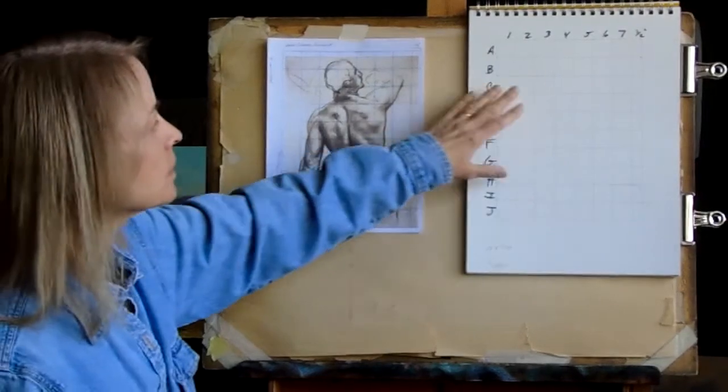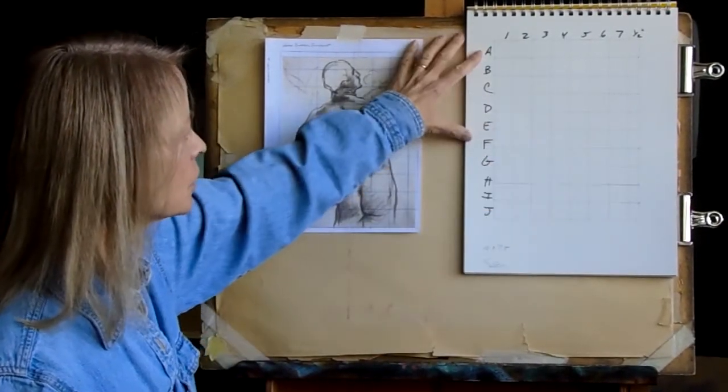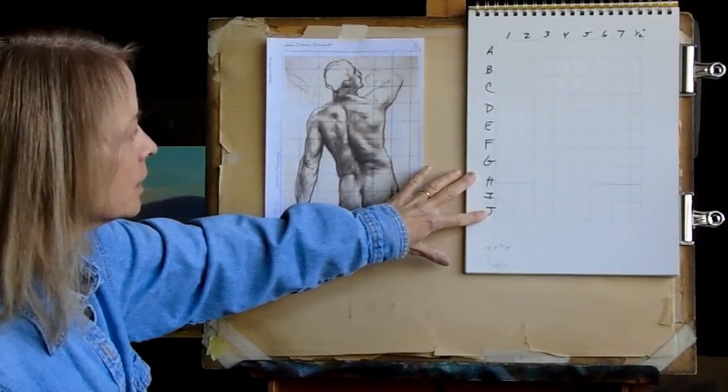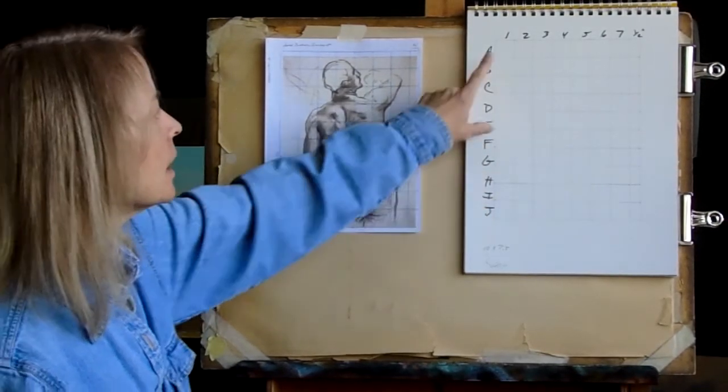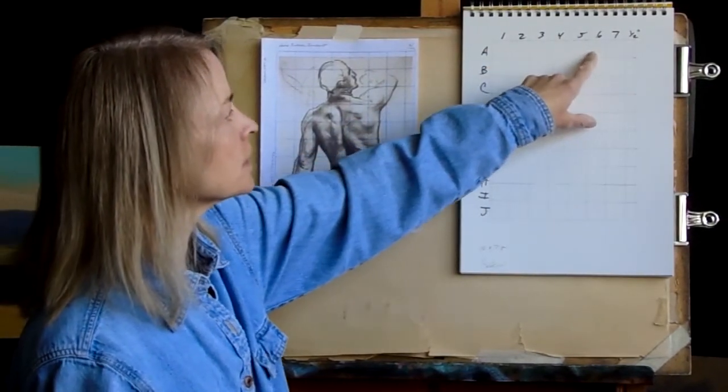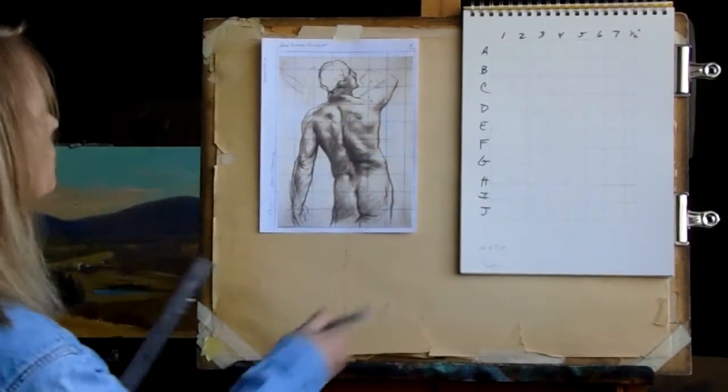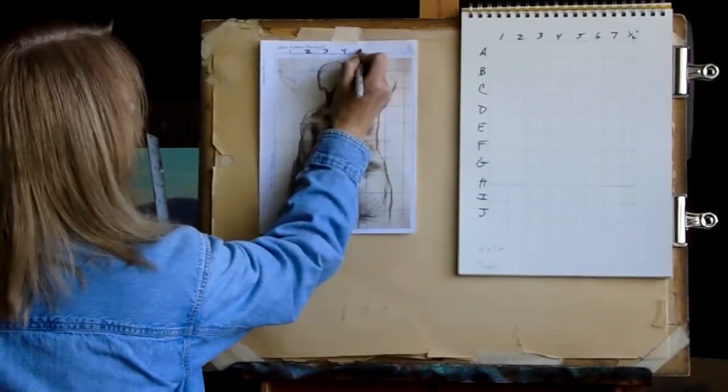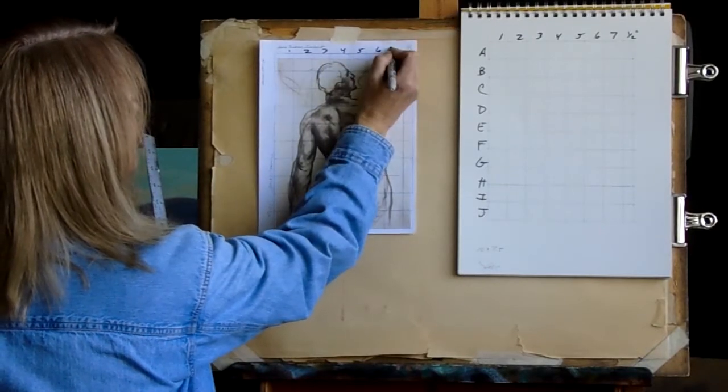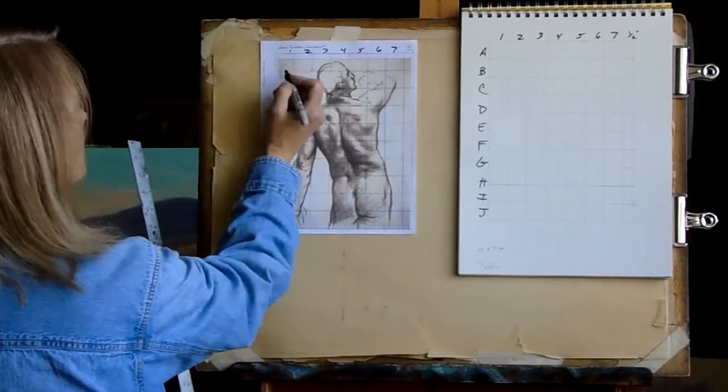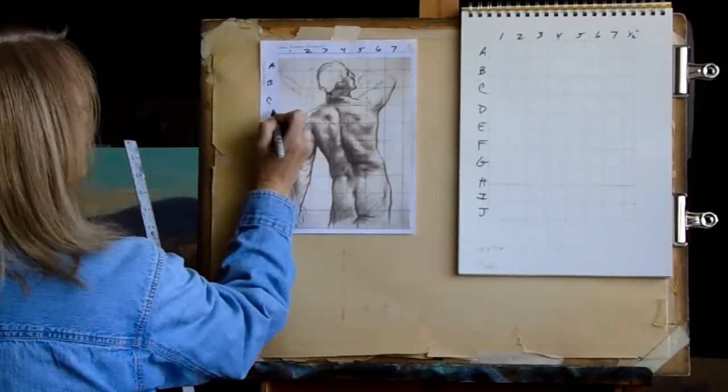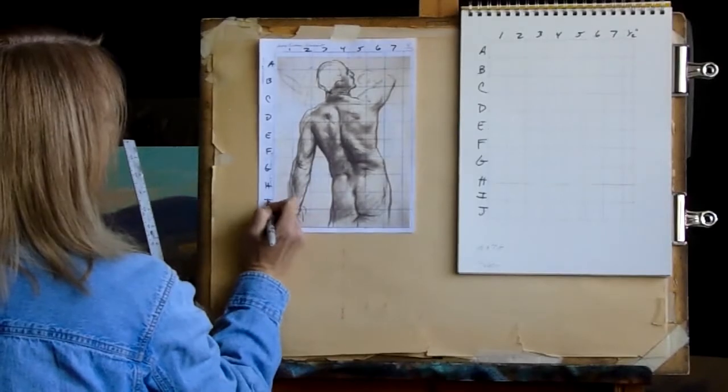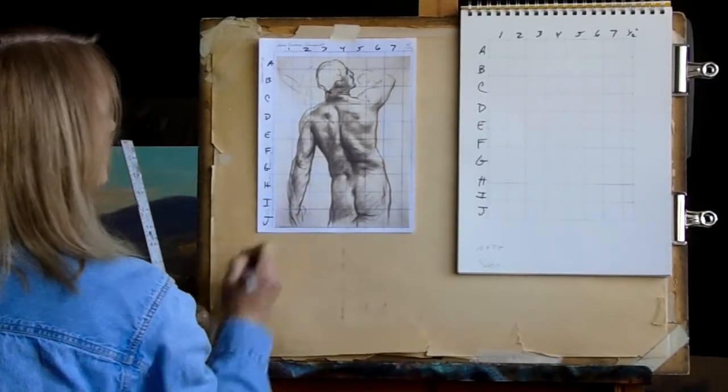So what I want you to do, so you don't get lost in the grid, is I want you to label each of these squares vertically with the letter of the alphabet. And then each of these squares going horizontally, I want you to number them. And I am going to do the same thing over here. So one, two, three, four, six, seven, and that is my half space. A, B, C, D, E, F, G, H, I, and J.